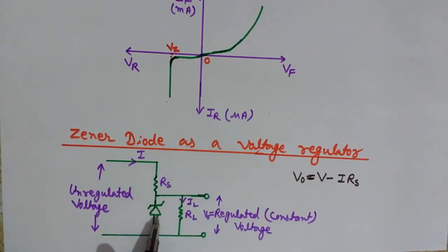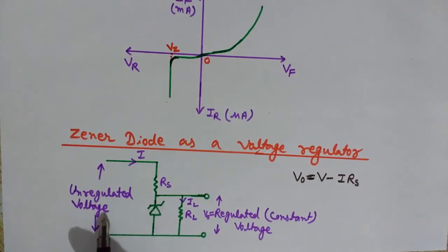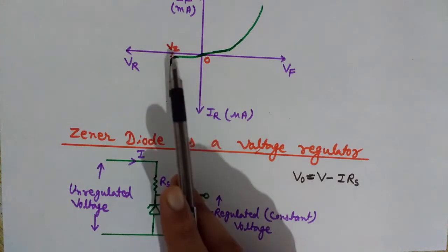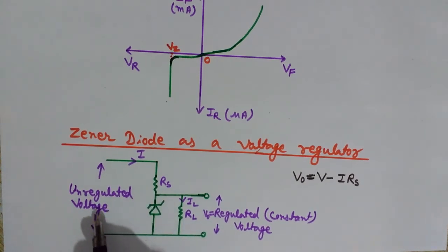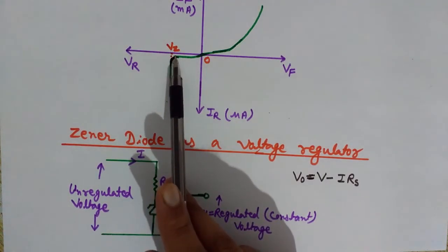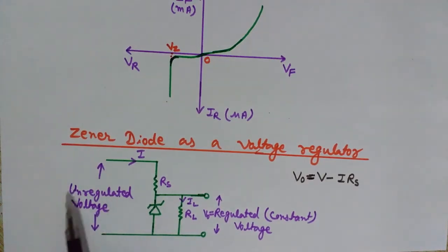In this circuit we have the zener diode and a load resistance. We want a regulated, constant output voltage. The input is an unregulated voltage supply and we want regulated constant voltage at the output. The voltage across the zener diode does not increase above Vz — it remains constant at Vz. The condition is that the unregulated voltage must be above the zener breakdown voltage.